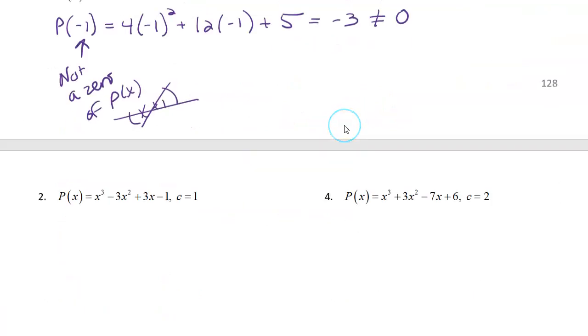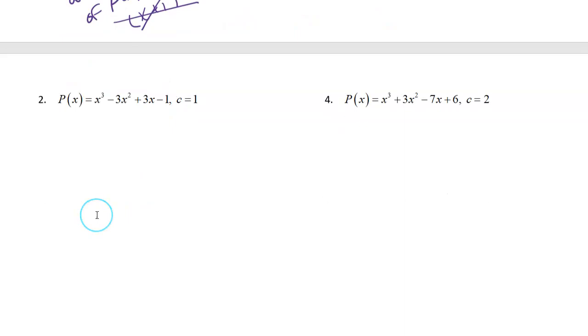So let's do another one here. I want to show you one that actually does work out. So if you look at number 2, we're first going to evaluate p for the value of 1. And then you'll just do a little punching on the calculator there, and you get 0 as your outcome.